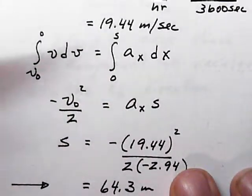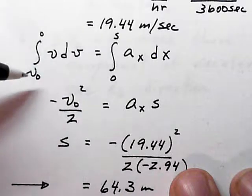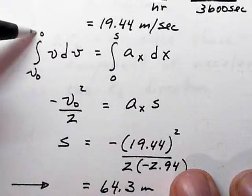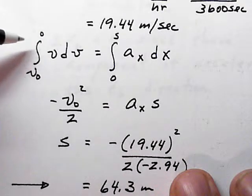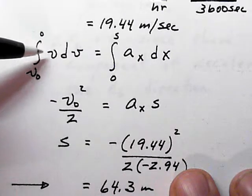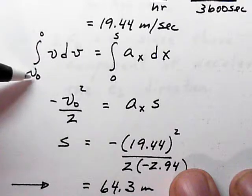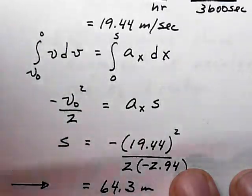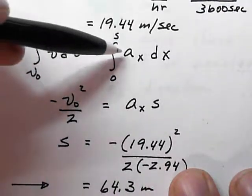This is going to give v² over 2 evaluated at zero minus the value at v₀, so this is going to be minus v₀² over 2. Since a is a constant, we're just integrating dx from zero to s, so this becomes a times s.